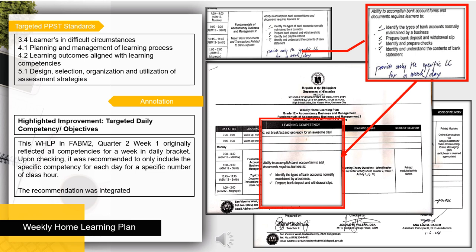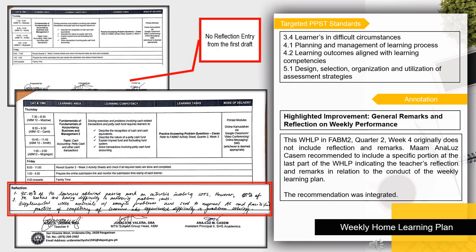This WHLP sample highlights the improvement on the inclusion of a general remarks and reflection section on weekly performance. The WHLP in FABM 2, Quarter 2, Week 4 originally did not include a reflection and remarks section. Madam Luz Kasim recommended including a specific portion at the last part of the WHLP indicating the teacher's reflection and remarks in relation to the conduct of the weekly learning plan. The recommendation was integrated.